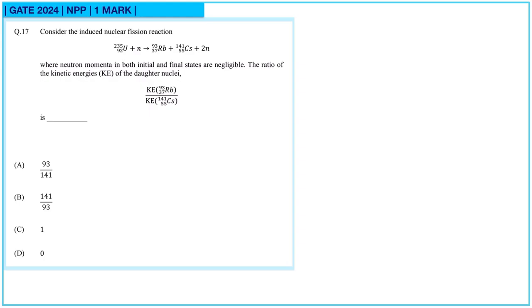Question number 17: consider the induced nuclear fusion reaction given, where neutron momenta in both initial and final states are negligible. The ratio of the kinetic energies of the daughter nuclei are to be found.